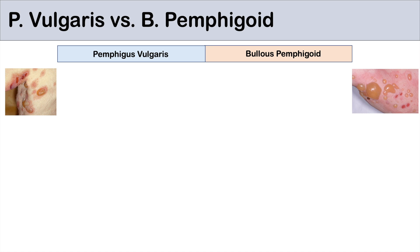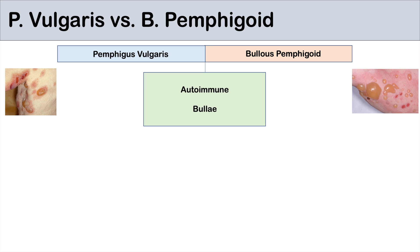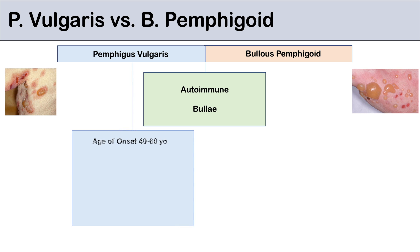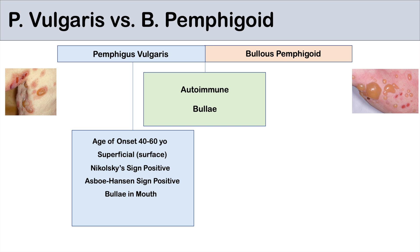Let's summarize both conditions and look at their key similarities and differences. The similarities are really not that much — both are autoimmune conditions and both have bullae formation. With pemphigus vulgaris, the age of onset is younger, around 40 to 60 years old. It is a more superficial cause, with IgG antibodies attacking desmoglein 1 and 3. Nikolsky sign and Asboe-Hansen sign are both positive. Bullae are often present in the mouth in around 90% or more of cases, and the bullae are non-pruritic and intraepidermal.